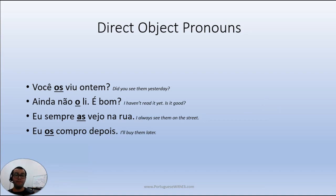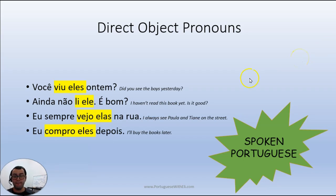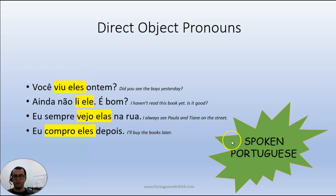But sometimes you need to put object pronouns after the verb. If you're learning Brazilian Portuguese and talking to Brazilians, in spoken Portuguese we use the personal pronouns — ele, ela, eles, elas — as object pronouns in daily conversation. So instead of 'você os viu,' you would say 'você viu eles.' 'Ainda não li ele' — ele referring to the book. 'Eu sempre vejo elas' — Paula e Tiane. 'Eu compro eles depois' — the books. This is mostly used in spoken Portuguese, though many people now write like they talk. But if you're preparing for a proficiency test, don't use that in writing.